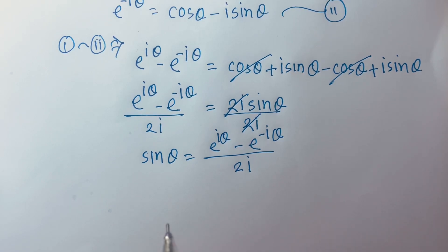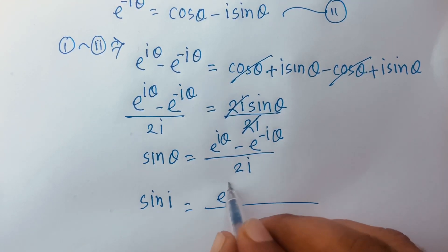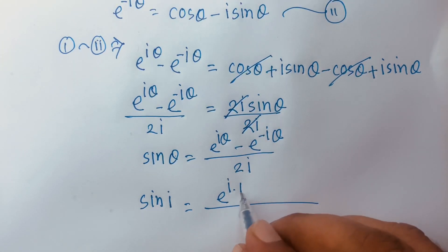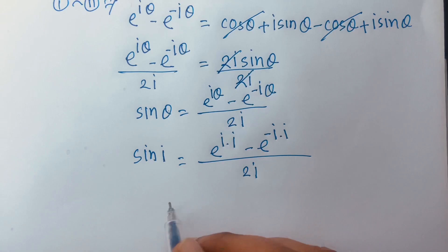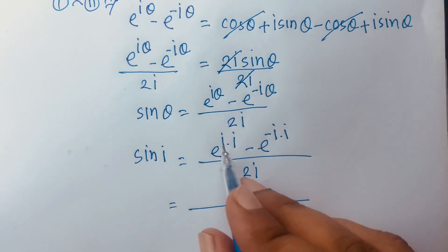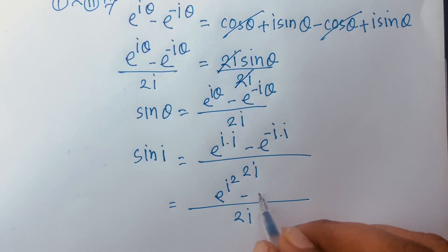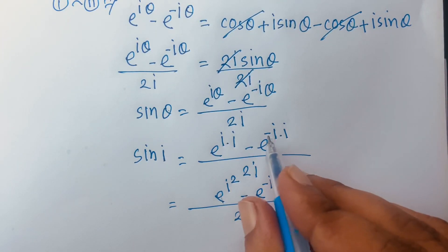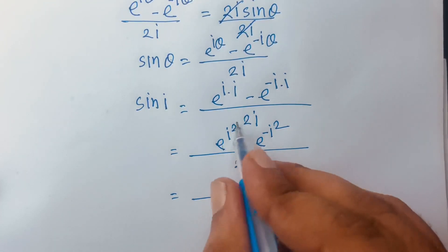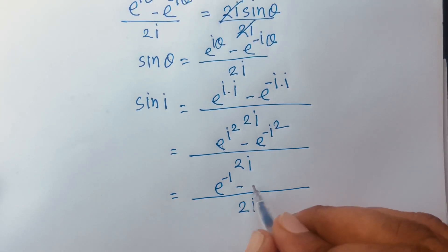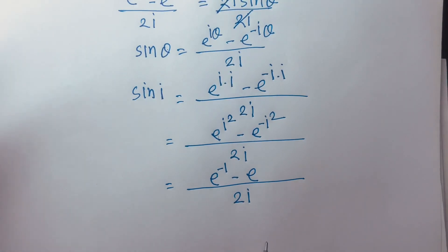Now if I use theta equals i in this formula, I get sine of i equals e to the power i times i minus e to the power minus i times i, over 2i. Since i times i equals i squared, this becomes e to the power i squared minus e to the power minus i squared, over 2i. And since i squared equals minus 1, we get e to the power minus 1 minus e to the power minus(minus 1), over 2i.